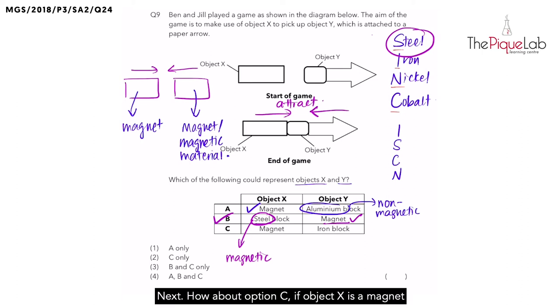Next, how about option C? If object X is a magnet and object Y is an iron block, would this setup work? We have a magnet, so correct. Next, iron block. Is iron a magnetic material? Yes. Iron is also a magnetic material.